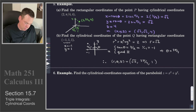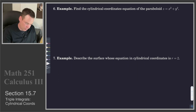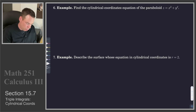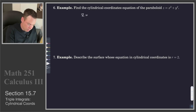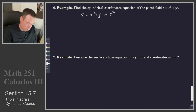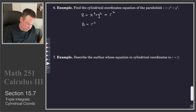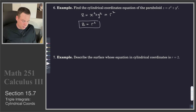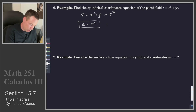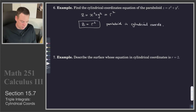Now let's look at surfaces and their descriptions. We've got a paraboloid z = x² + y². We would like to describe that in terms of cylindrical coordinates — right now it's in rectangular coordinates. The key observation is that x² + y² = r², so therefore our description of the surface becomes the set of all points (r, θ, z) where z = r². That's the paraboloid in cylindrical coordinates.